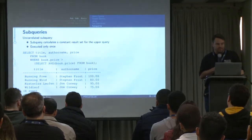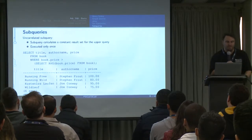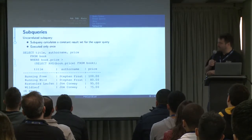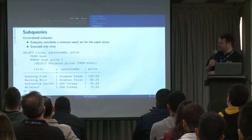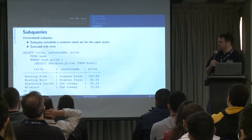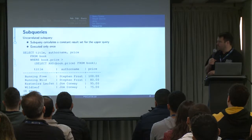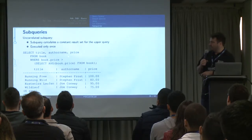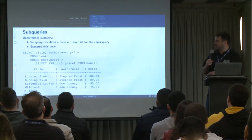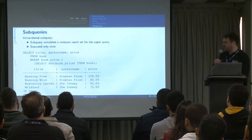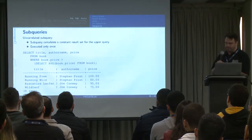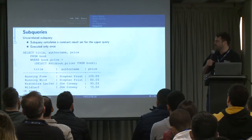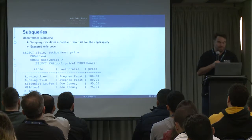Now let's start talking about subqueries. An uncorrelated subquery basically just calculates a constant result set and plugs it in. This query inside the parentheses doesn't depend on anything in the outer query — this average of book.price from book only operates against things inside that subquery, making no references to anything outside. This query says: give me the books that are greater than the average book price. Because it's uncorrelated, we can execute it just once for the overall query and return the results.